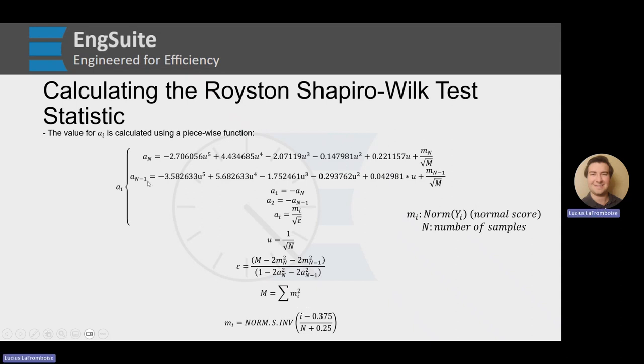Once we have those, we can also do a of n minus 1, which is a very similar equation, just some different coefficients. And we, at the end, take m_(n-1) instead of m_n. Then we can jump back to the beginning because a_1 equals negative a_n and a_2 equals negative a_(n-1). Then,